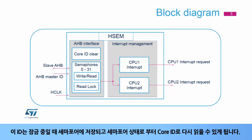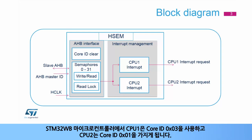This ID is stored in the semaphore when locking and can be read back from the semaphore's status as core ID. In STM32H7 microcontrollers, CPU1 uses core ID 0x03 and CPU2 has core ID 0x01.